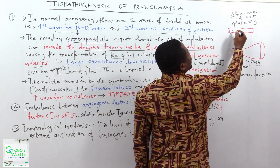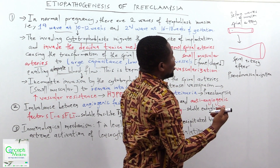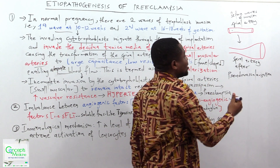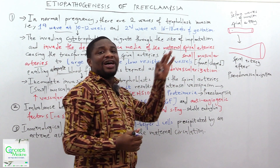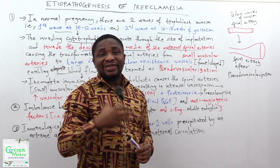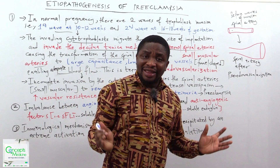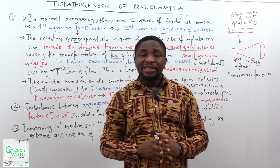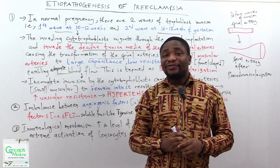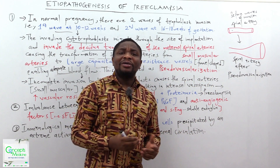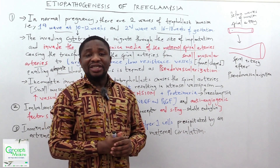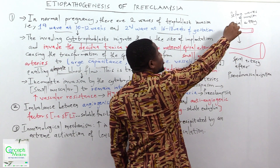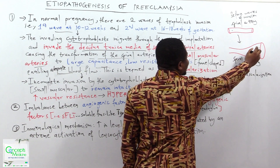When pseudo-vascularization occurs, the maternal spiral arteries — which are small and muscular before the waves of invasion — become large capacitance, low resistance blood vessels after the second wave of invasion. The spiral arteries assume their final shape, enabling adequate blood flow. The replacement of the endothelium of the spiral arteries by invading cytotrophoblasts is what we call pseudo-vascularization.